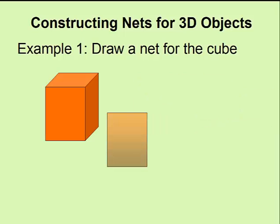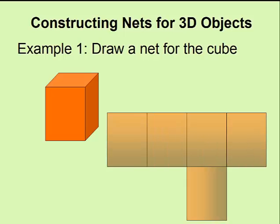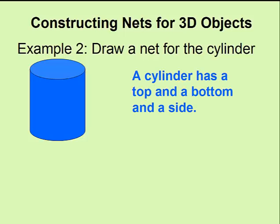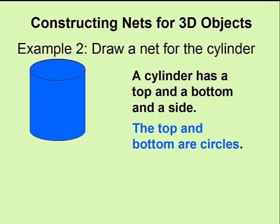We'll begin with the right, top, left, bottom, front and back of our cube. There we have our two-dimensional net for our cube. In our second example, we'll draw a net for a cylinder. A cylinder has a top and bottom and a side. The top and bottom are both circles.